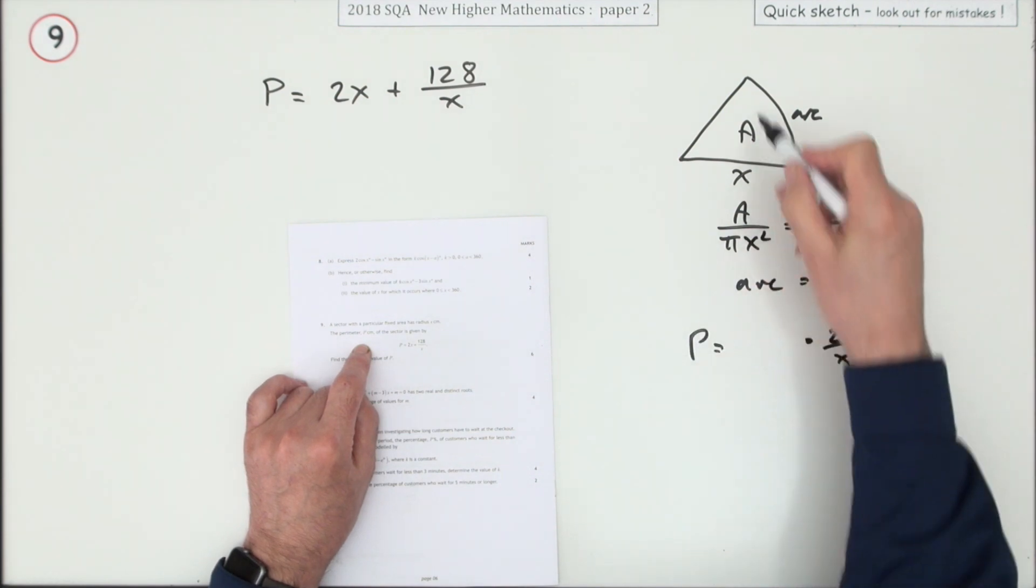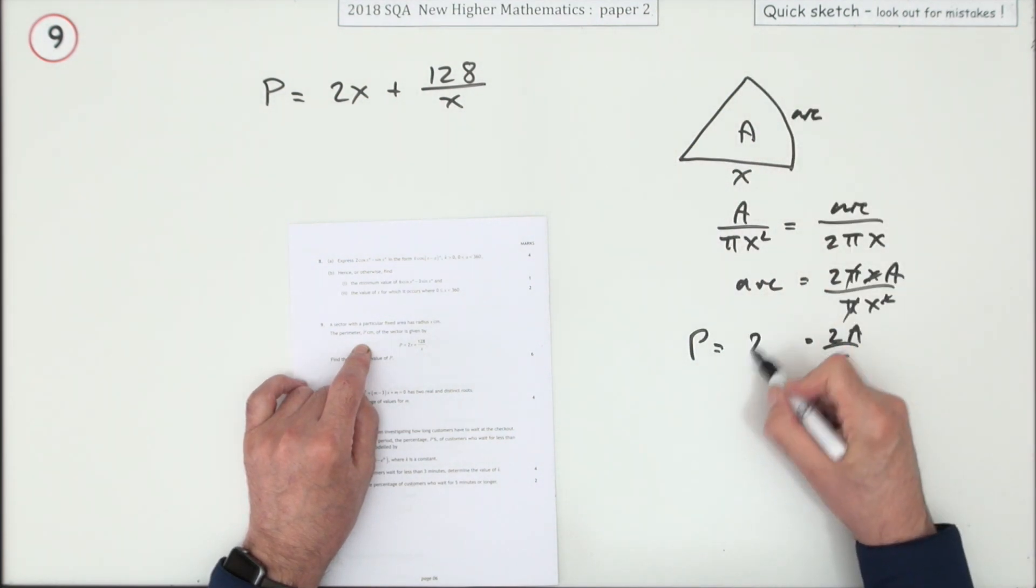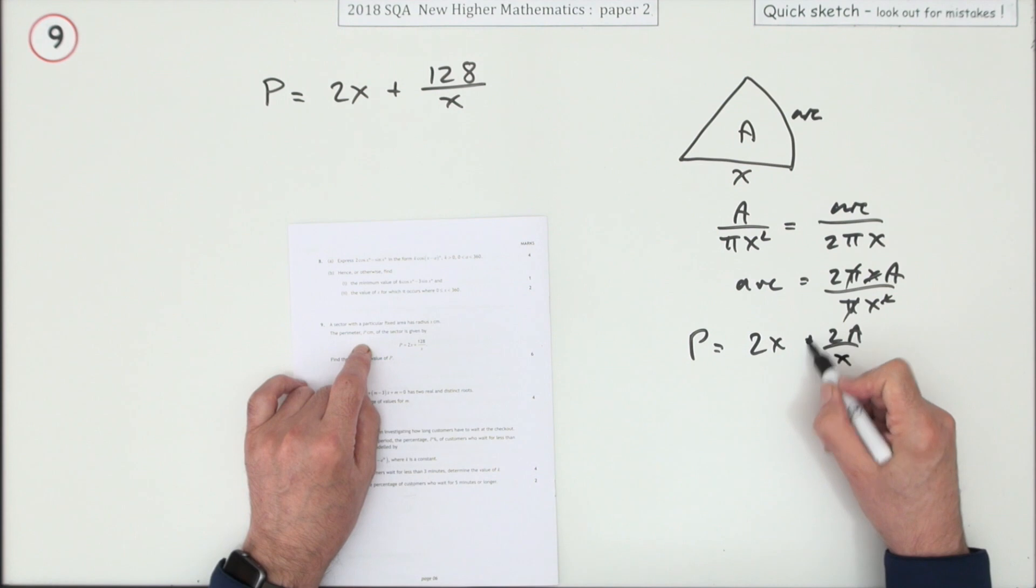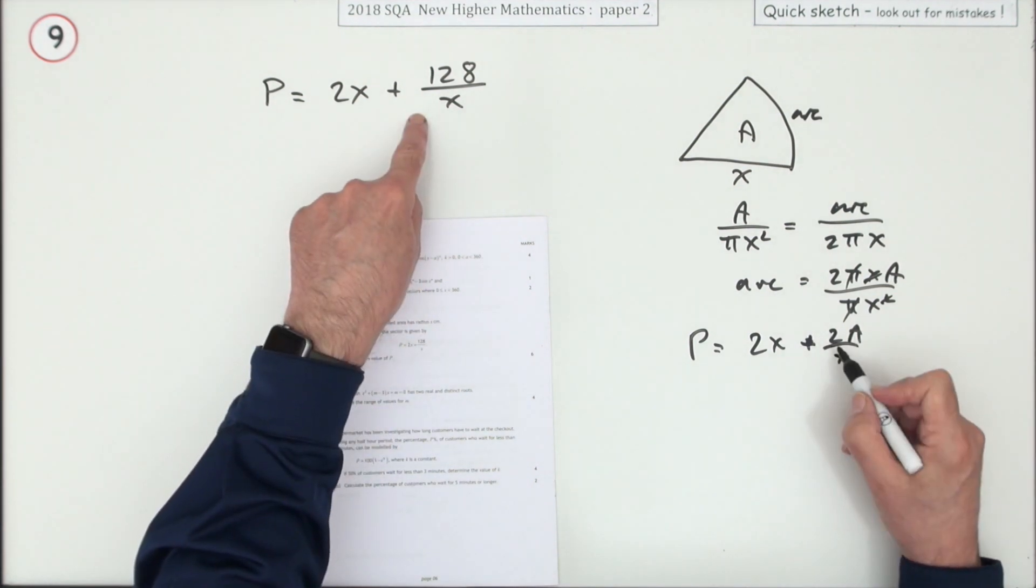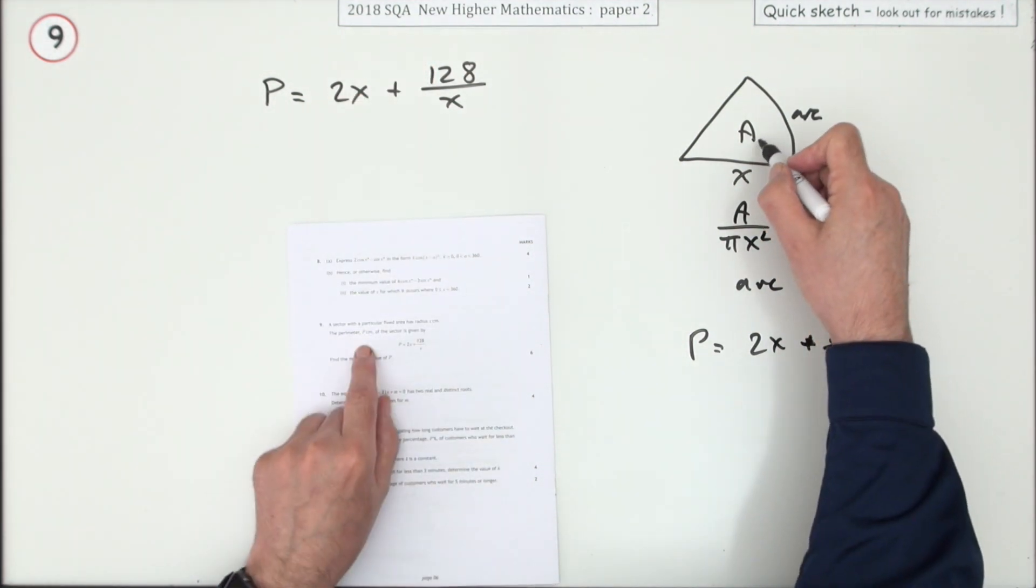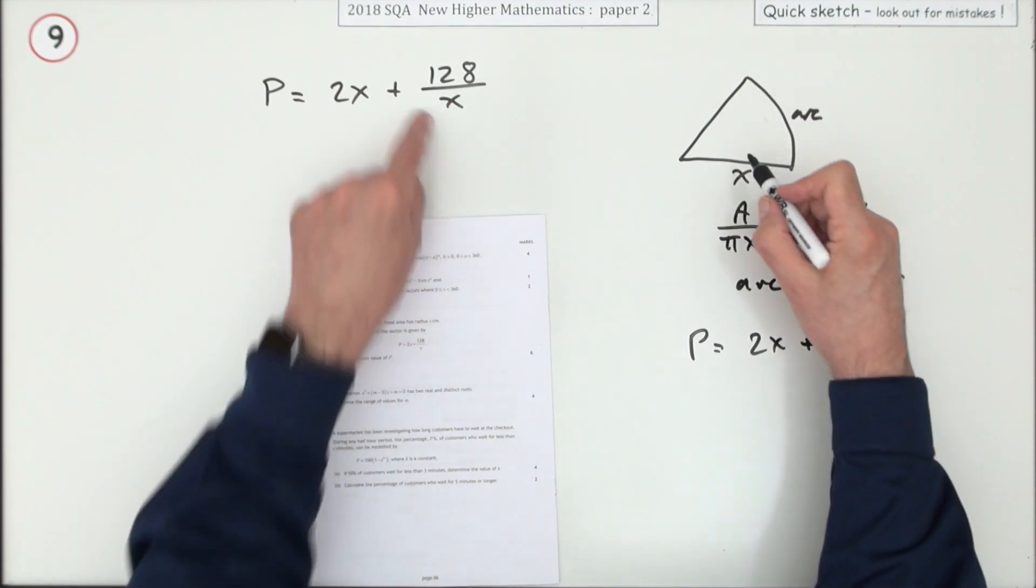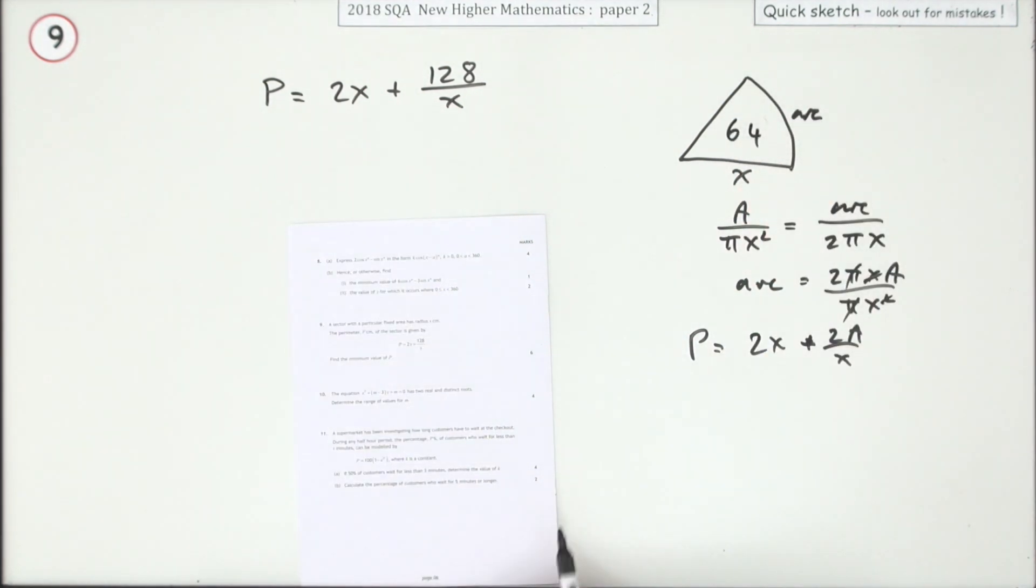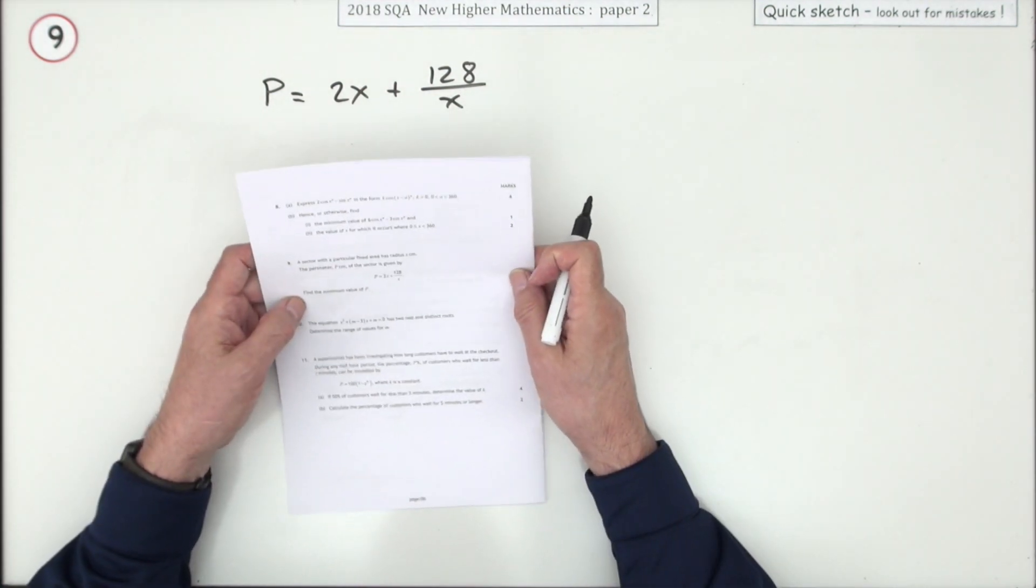The pi's cancel out, those x's cancel out, you're left with 2A upon x. And then for the perimeter it's going to be two lots of the radius plus the arc, so it's 2x plus that. So it looks very much as if this question originally said a sector has a fixed area of 64 square centimeters, show that that's an expression for the perimeter. Anyway, probably relieved that's not there.